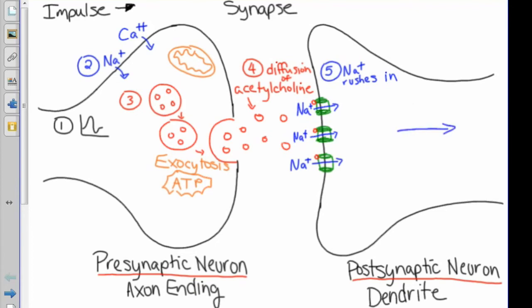Once we have depolarization in the postsynaptic neuron, then we want to get rid of the acetylcholine that is still in the synapse. An enzyme called cholinesterase is released into the synapse, which breaks down acetylcholine into its components, acetic acid and choline.